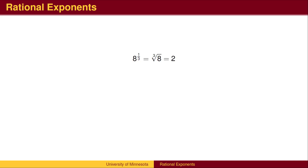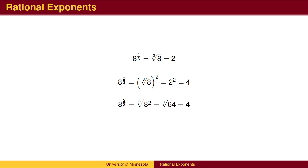The exponent 1 third means cube root, and so on. If the numerator of the exponent is not 1, we raise the root to that power. For example, 8 to the 2 thirds power can be thought of as a two-step process: first taking the cube root, then squaring to get the final answer. The order can be reversed — we could first square, then take the cube root. Usually the first method will be easier since the numbers we'll be working with will be smaller.